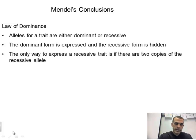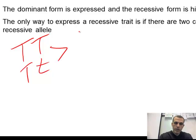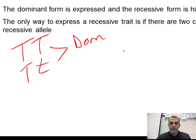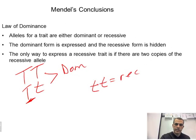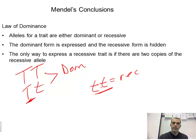For example, let's say we're using the letter T. A big T and big T, and also big T and little t, are both going to express the dominant trait in the phenotype. Now when we're talking about the recessive trait, the only way we're going to see it is if we have two lowercase letters, because the dominant trait will always mask the recessive trait. That's basically what the law of dominance says.